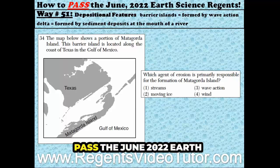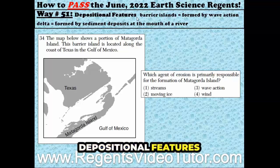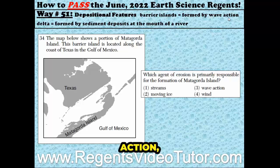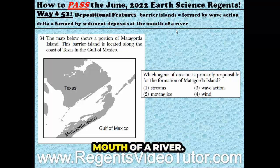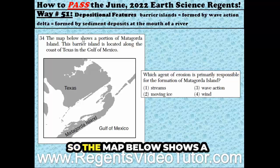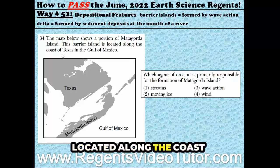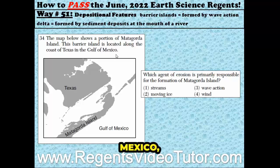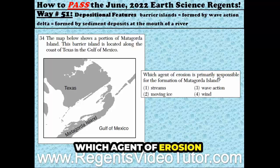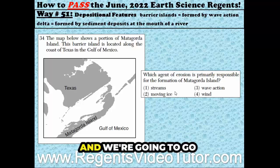Way number 51 on how to pass the June 2022 Earth Science Regents. Depositional features include barrier islands, which are formed by wave action, as well as a delta, which is formed by sediment deposits at the mouth of a river. The map below shows a portion of Matagorda Island, a barrier island located along the coast of Texas in the Gulf of Mexico. Which agent of erosion is primarily responsible for the formation of Matagorda Island? We're going to go with wave action because these are barrier islands.